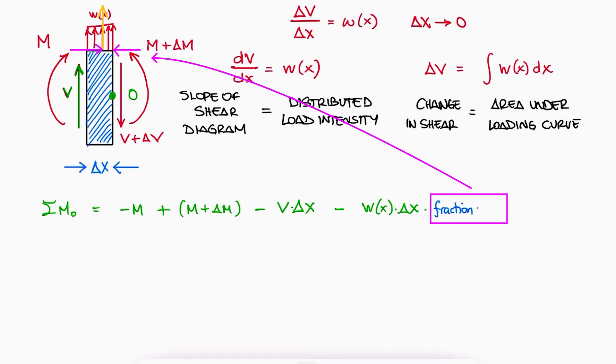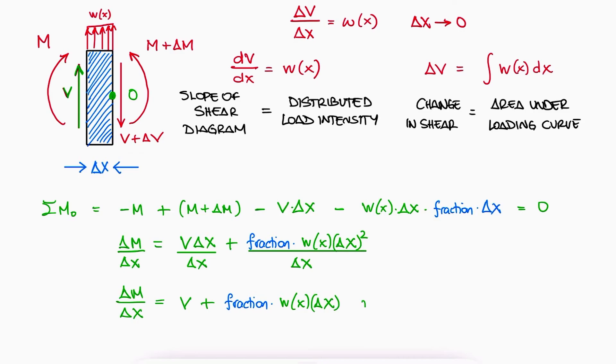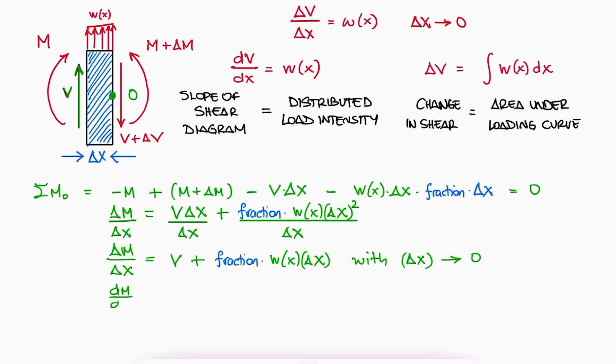Solving for delta M and letting delta x approach zero once again, we see that the slope of the moment diagram is equal to the shear value, which is what we concluded from the example before.